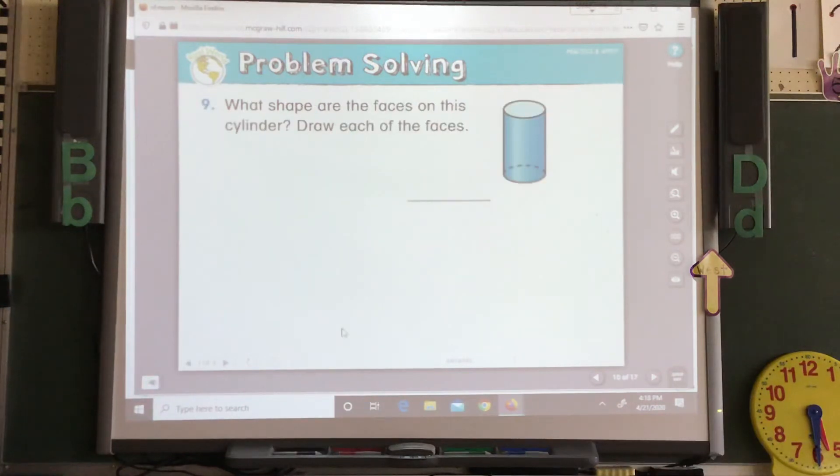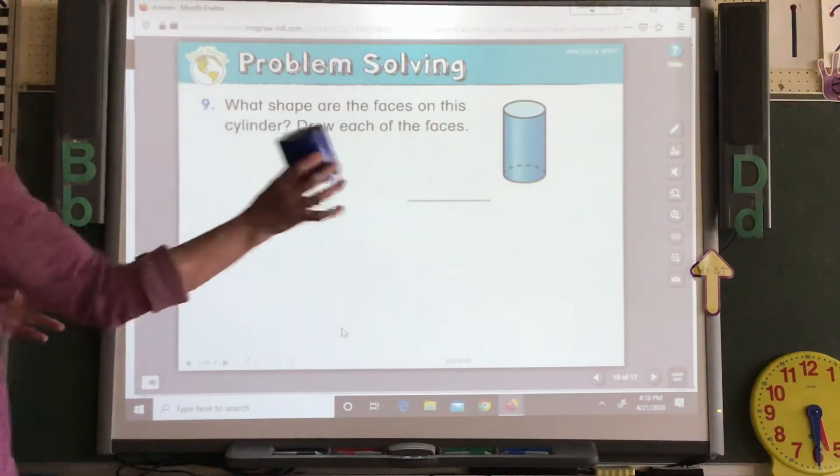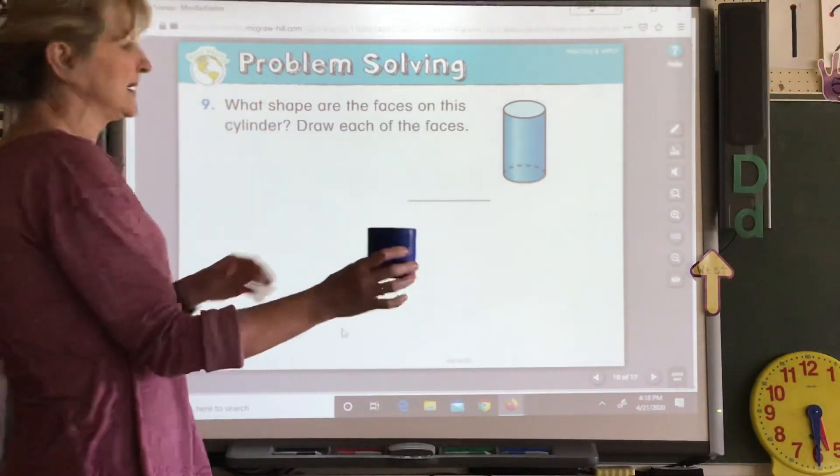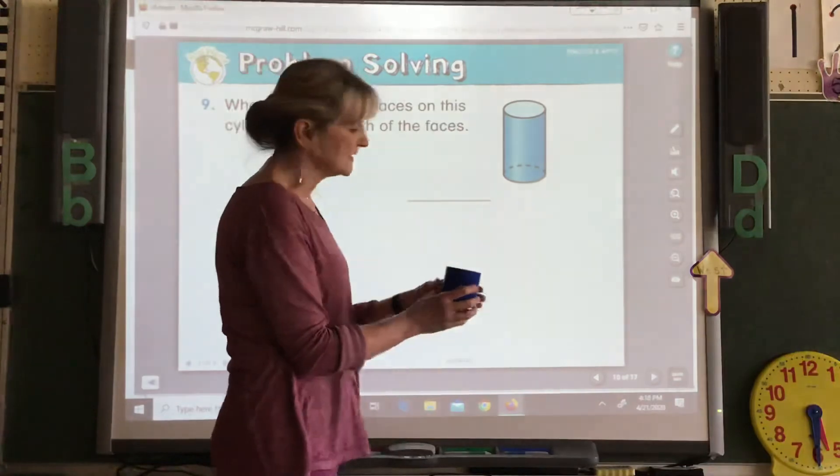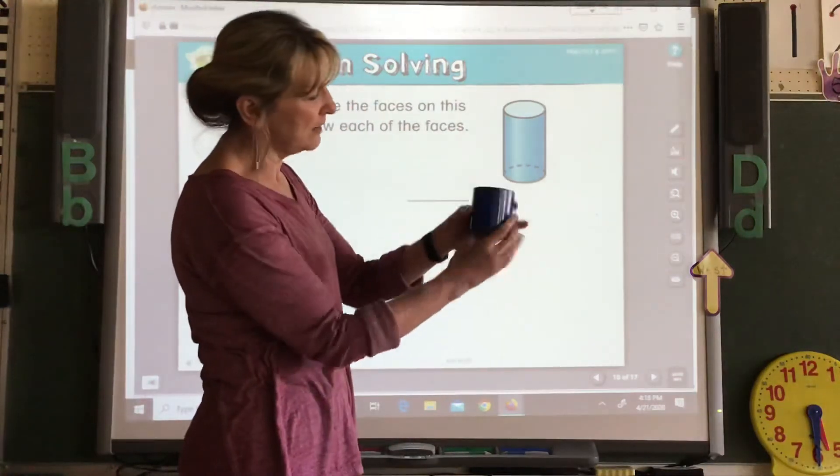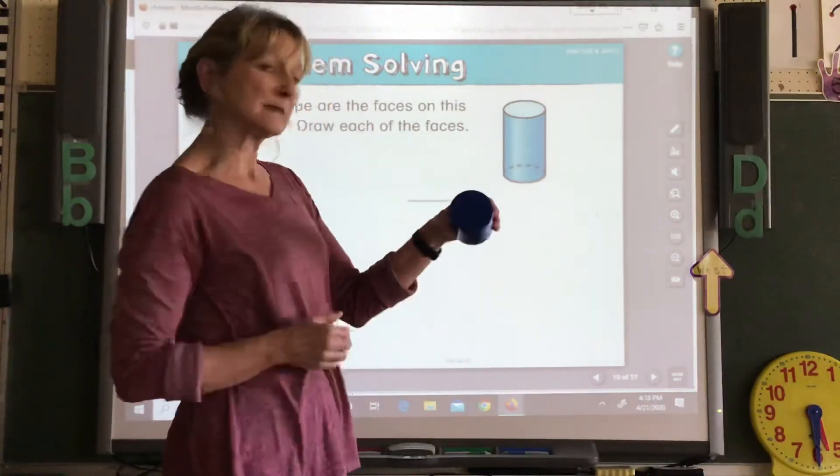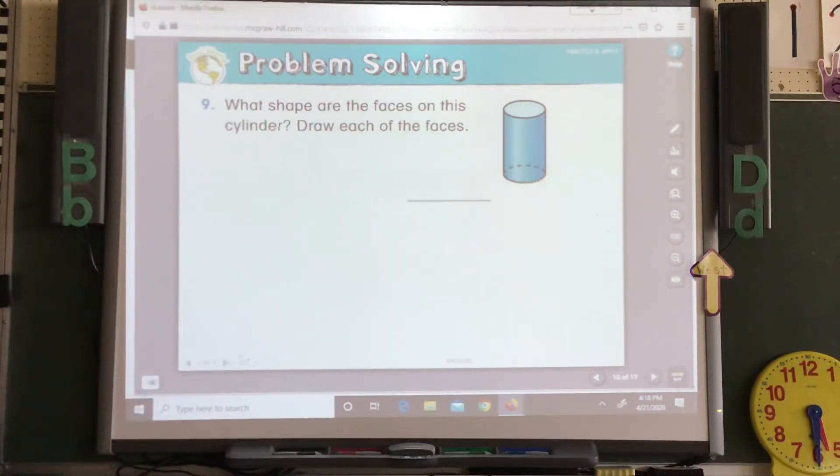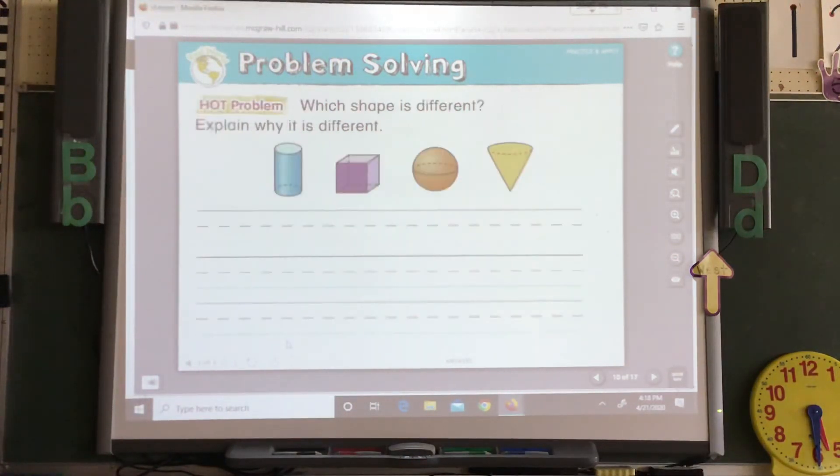Okay. What shape are the faces on this cylinder? Draw each face. So write the shape that the face is and then draw each face. Okay. You can trace it or you can just draw the shape that it is.